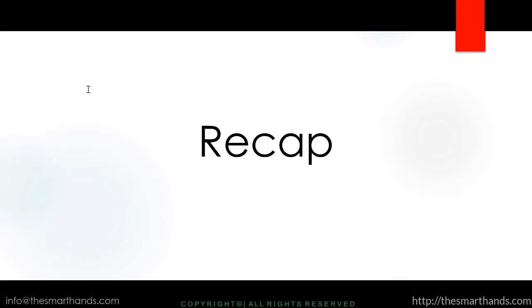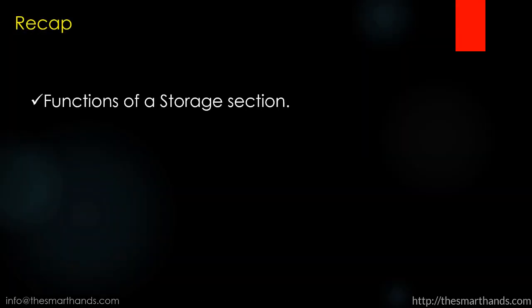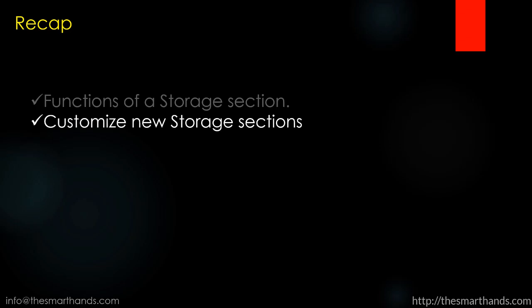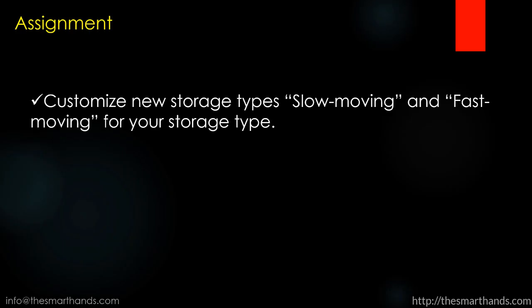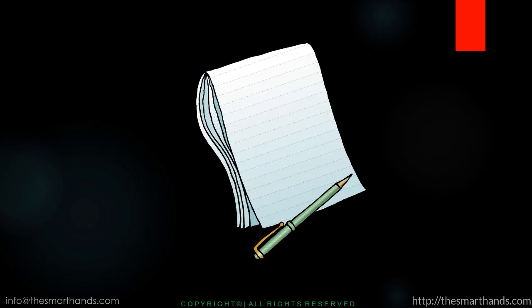That's all about this topic. Just a recap: today we learned about the functions of the storage section and how to customize a new storage section. For your assignment, I want you to customize new storage sections — call them 'slow moving' and 'fast moving' for your storage types — and make sure you also copy all the 900 ones. If you want to call them something else, not slow moving or fast moving, call it whatever you like. That's all about this video, and thank you for watching this lecture.